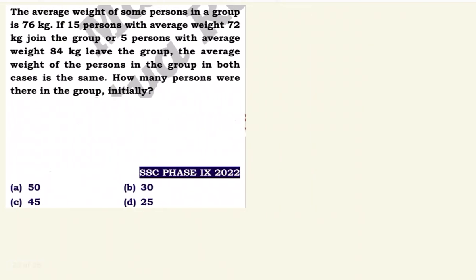In the first question, the average weight of some persons in a group is 76 kg. If 15 persons with average weight 78 kg join the group, or 5 persons with average weight 84 kg leave the group, the average weight of the persons in the group in both cases is the same. How many persons were there in the group initially?